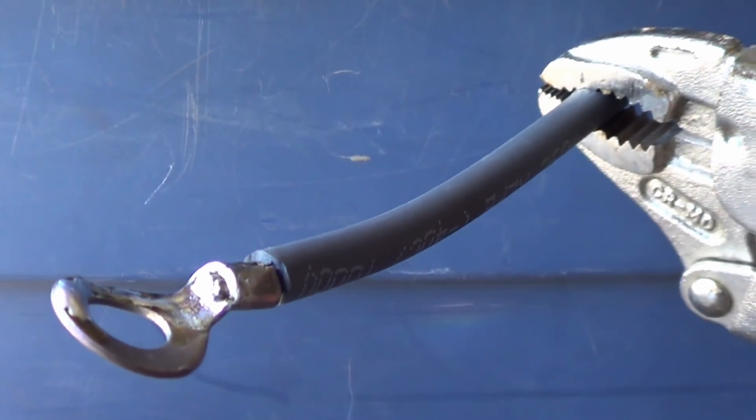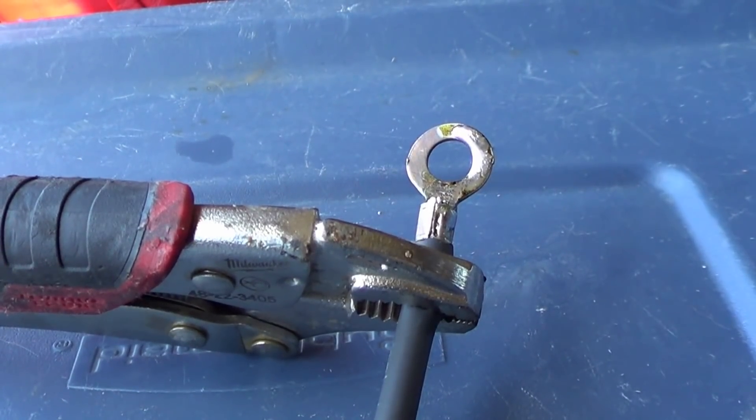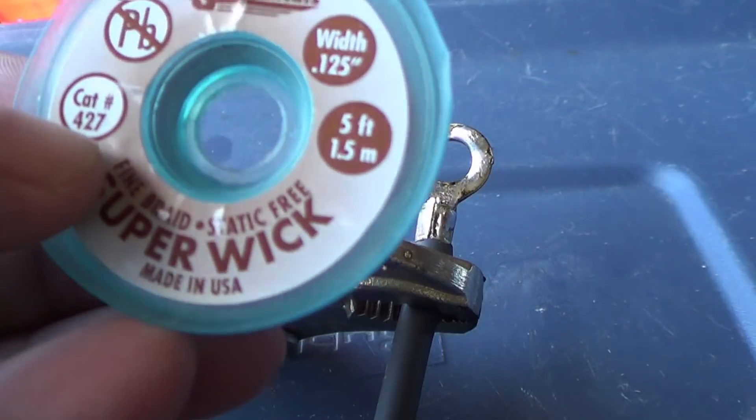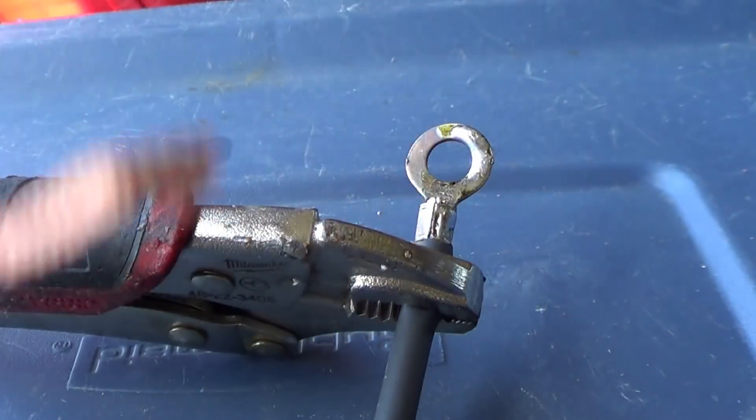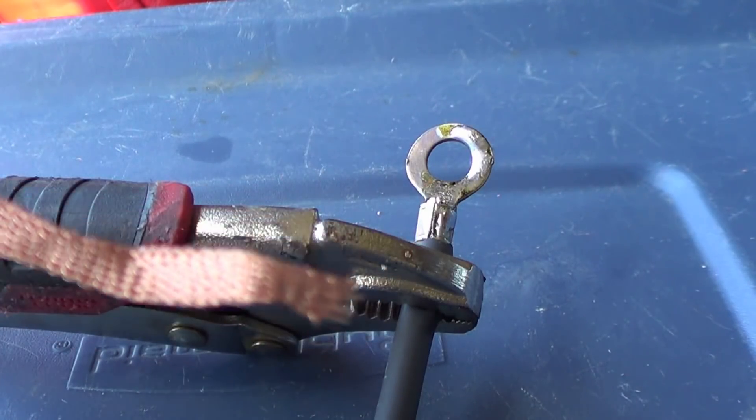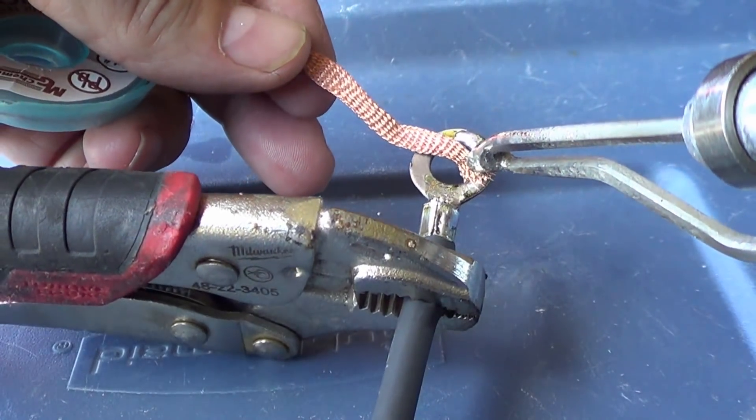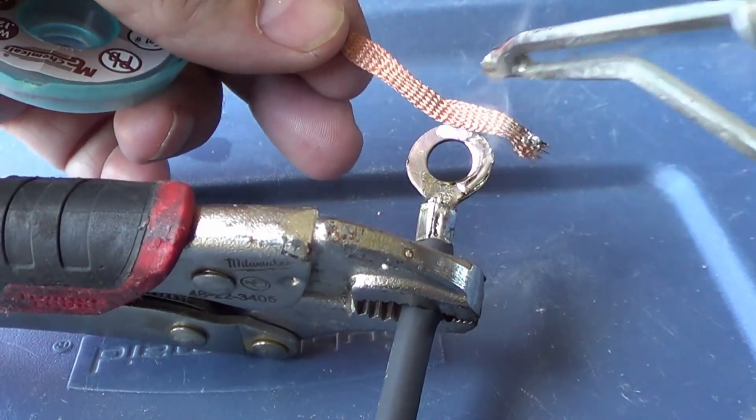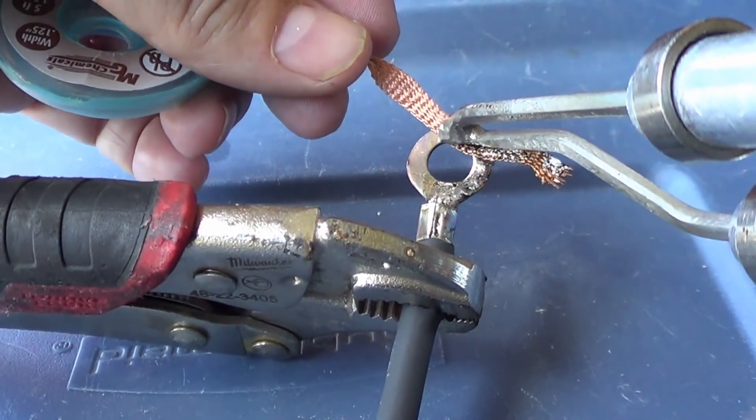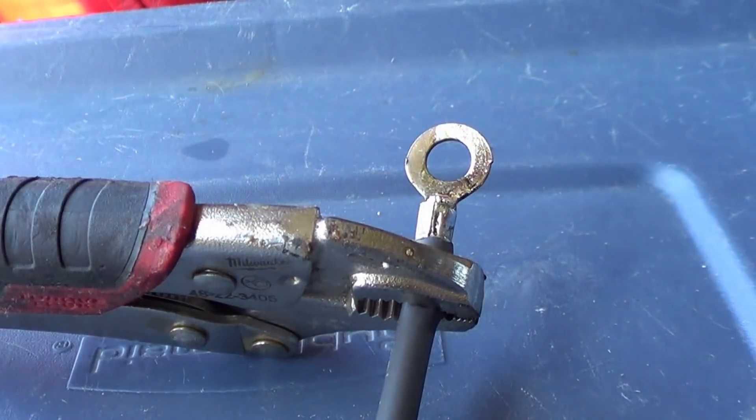A tip: if you ever need to remove some excess solder, this stuff called Super Wick, this is by MG Chemicals. It's like a copper braided line and it's got flux embedded in it. So just put it up to where you want to get rid of the solder and it sucks it up, just like so.